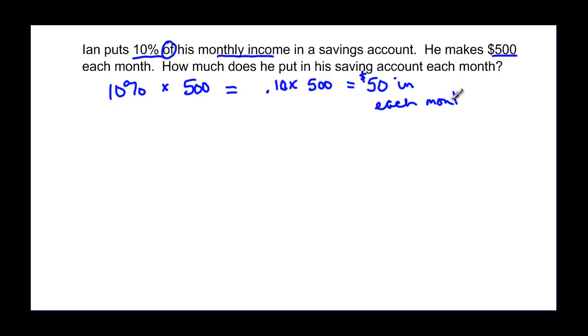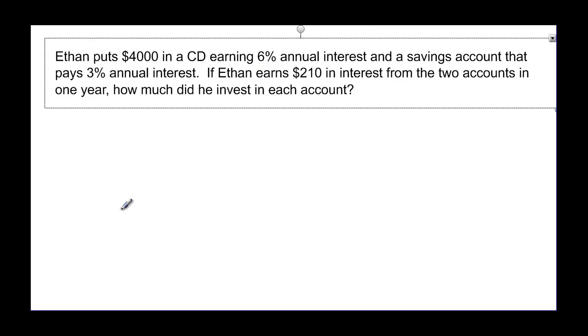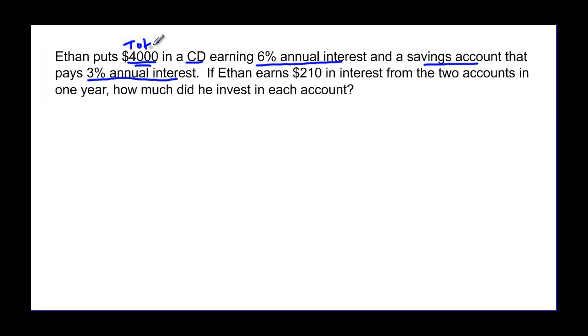Ethan puts $4,000 in a CD earning 6% annual interest and a savings account that earns 3% annual interest. He puts the $4,000, that's the total. If Ethan earns $210 in interest from 2 accounts in 1 year, how much did he invest in each account?